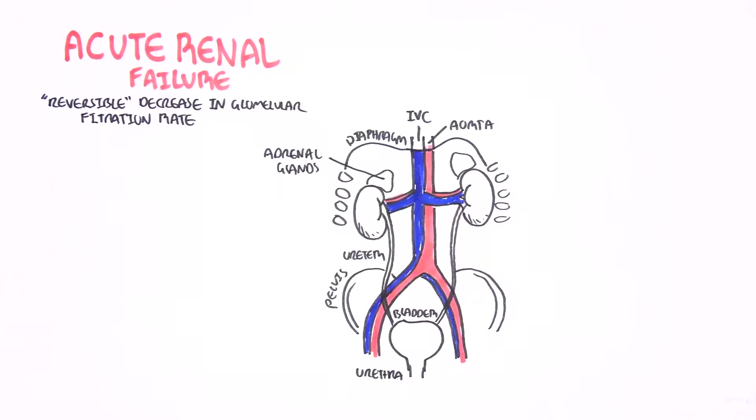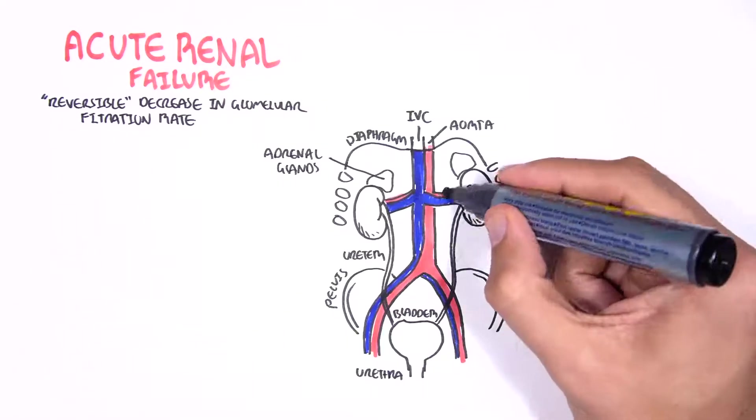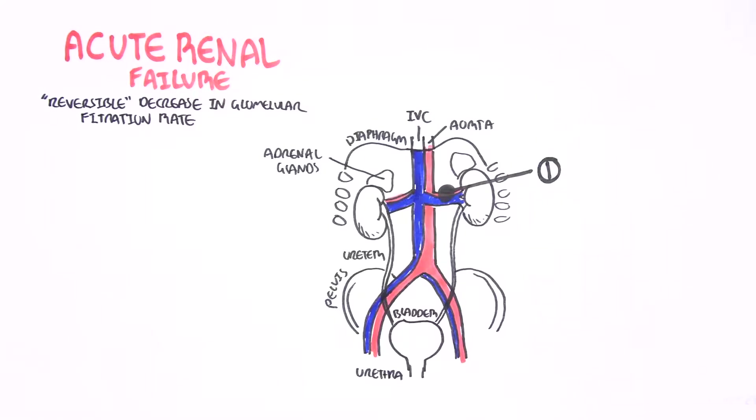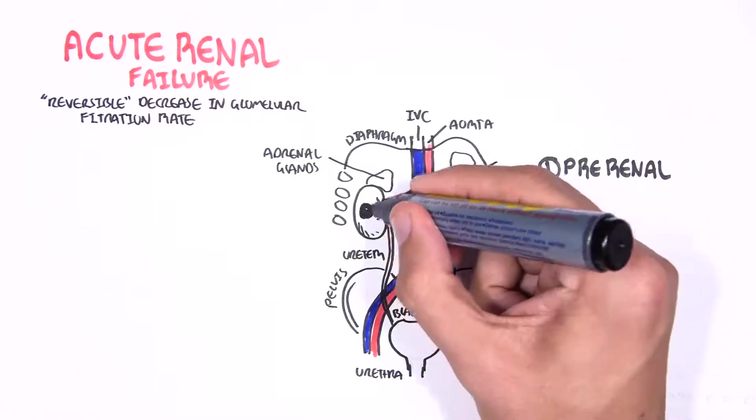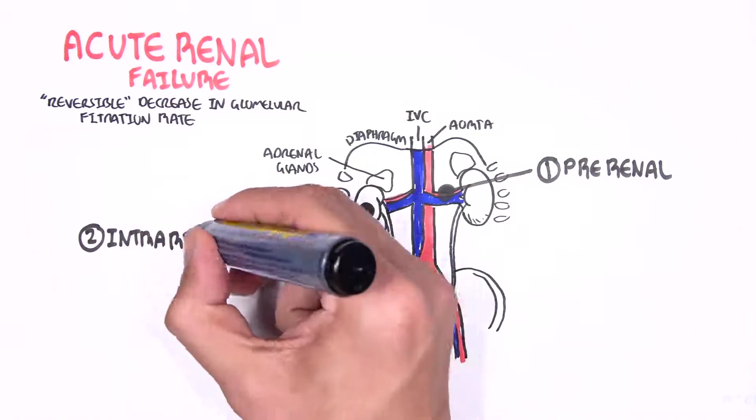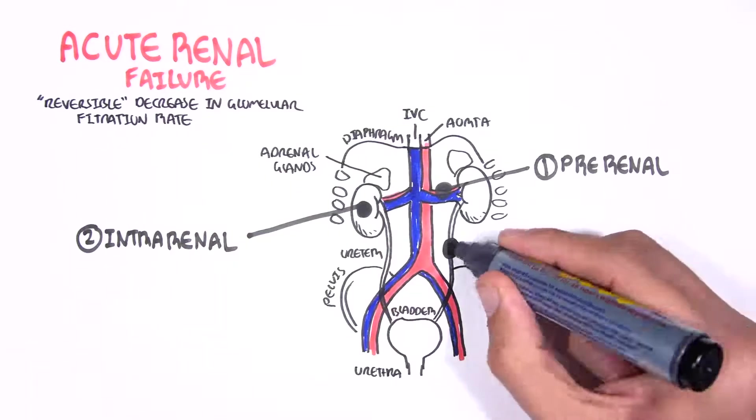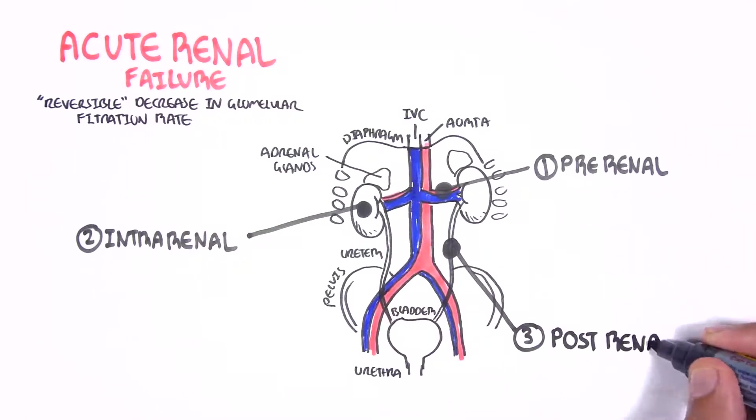I want to talk about the main causes of acute renal failure. There are three main ones: it can either be pre-renal before the kidneys, intra-renal within the kidneys, or post-renal after the kidneys. These are the main causes, but now we will focus on each one and look at them in more detail.